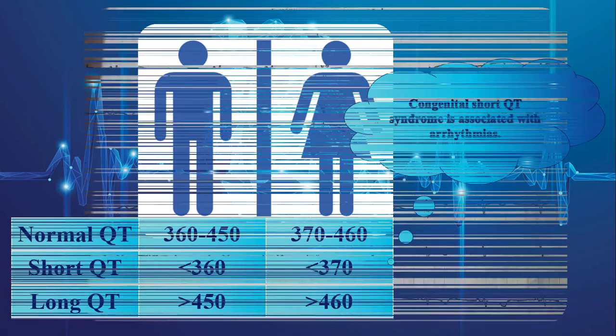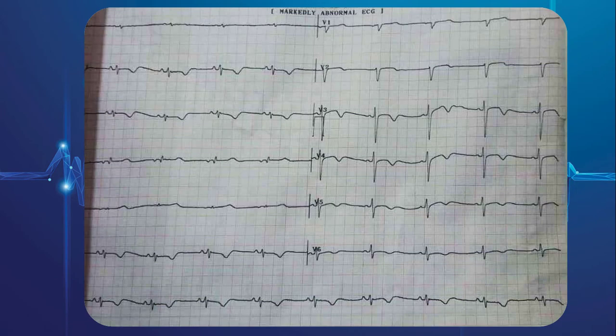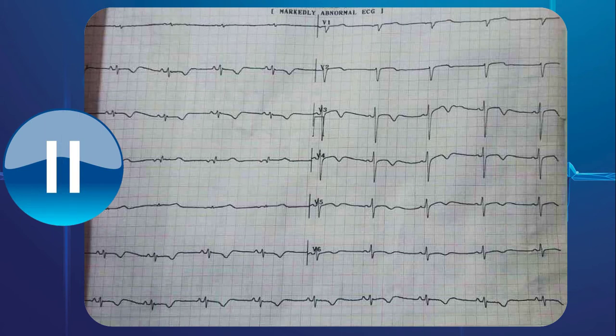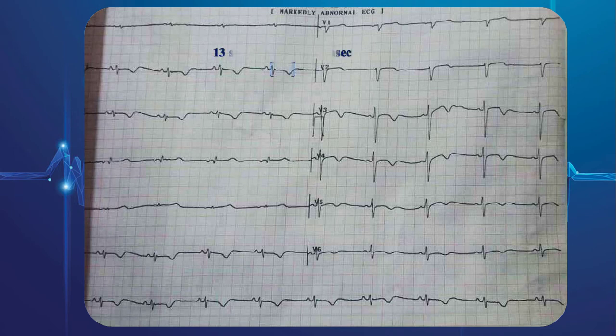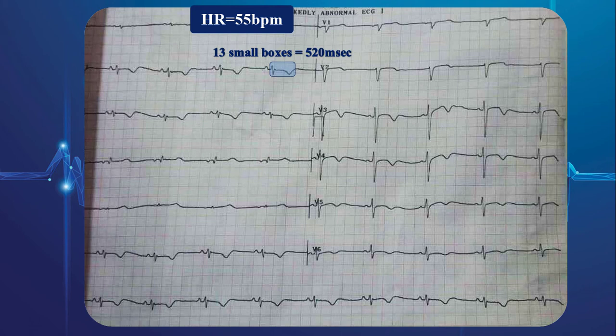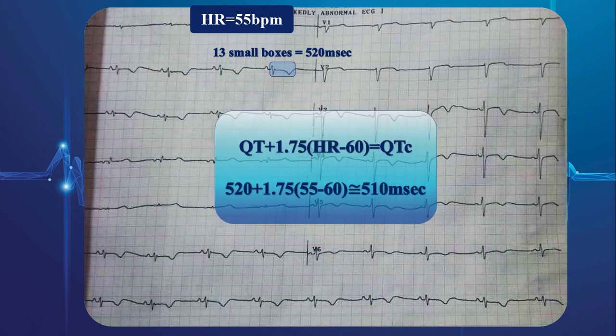Let's go through several examples. This is our first EKG strip. What do you think about the QT interval? Is it long, short, or normal? Pause the video to take time to calculate QTc using Hodges formula on your own, then restart and check your answer. Here, the actual QT interval is about 13 small squares and the heart rate is 55 beats per minute. Therefore, the corrected QT interval, or QTc, is about 510 milliseconds, which is prolonged.